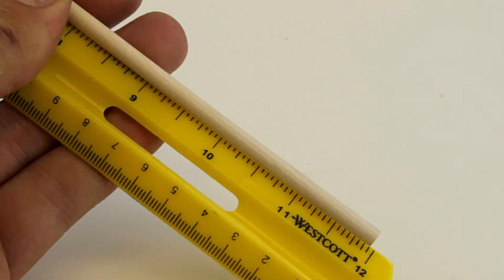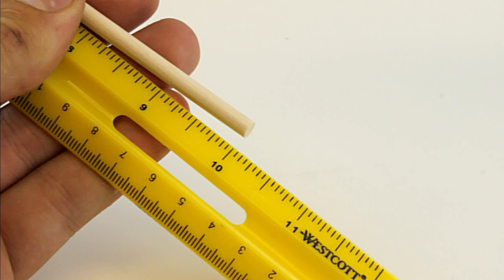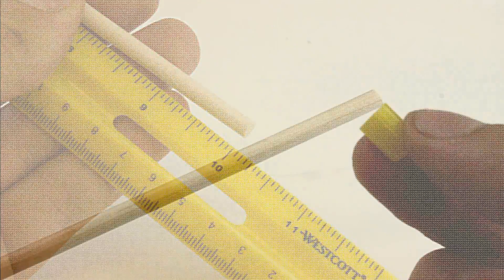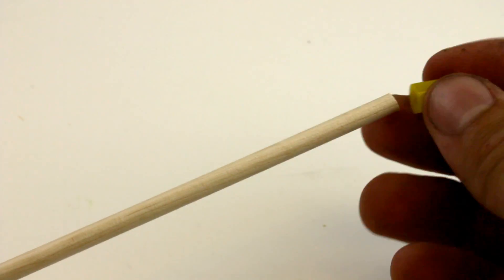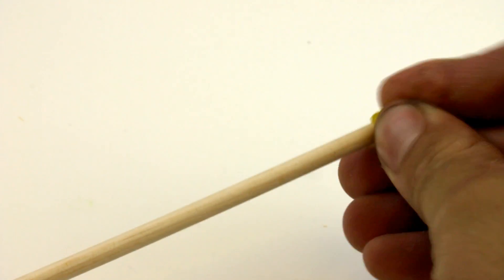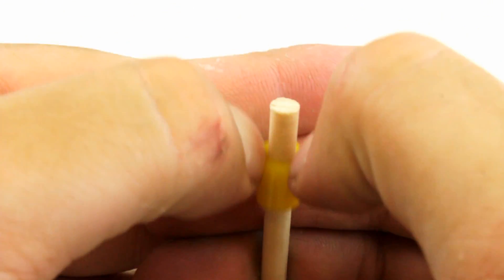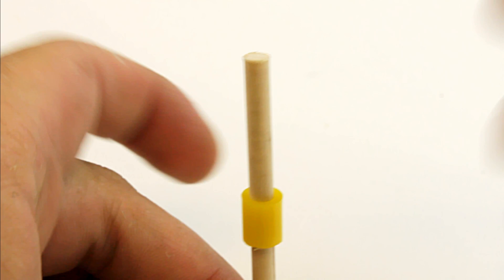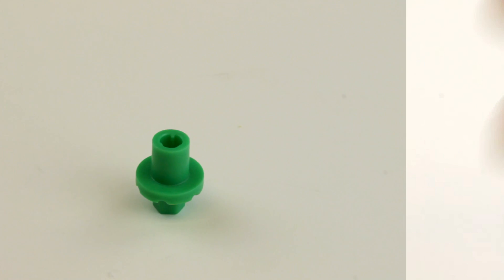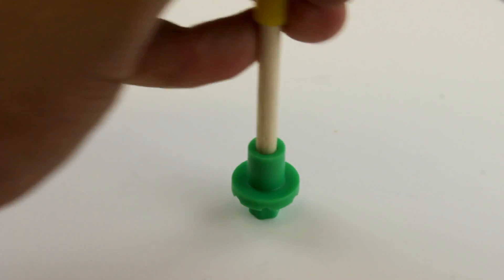Take another dowel and cut it to 250 millimeters, which is about 10 inches. Cut a small piece of slide stop and place it onto the end of your dowel, then slide the slide stop down 50 millimeters, about 2 inches. Push the 10 inch dowel into the mini hub base, making sure that the slide stop is on the same side.